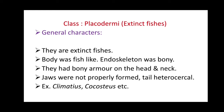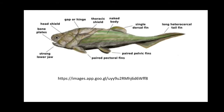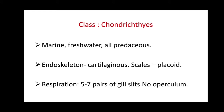The general characters of Class Placodermi: they are extinct fishes. The body was fish-like and the endoskeleton was bony. They had a bony armor on the head and neck, protected by a bony covering. Jaws were not properly formed, and the tail was of heterocercal type. Climatius and Coccosteus are examples. This is the diagram of extinct fishes.